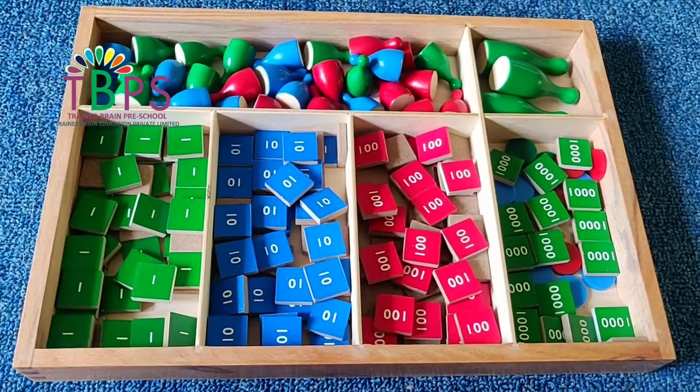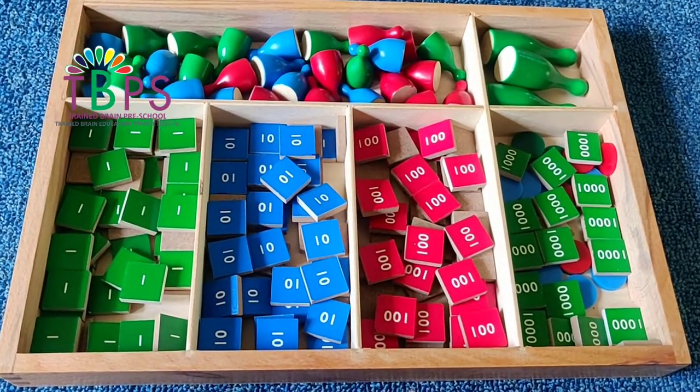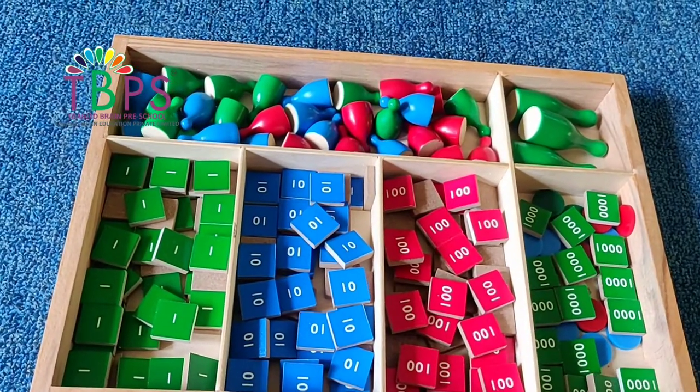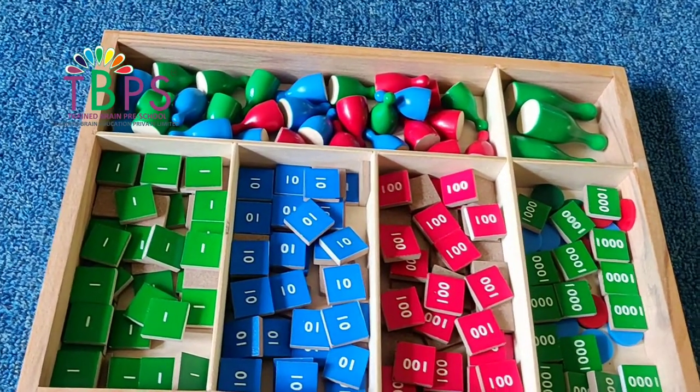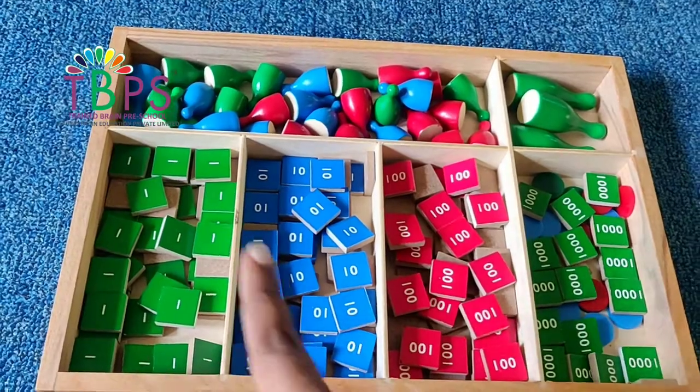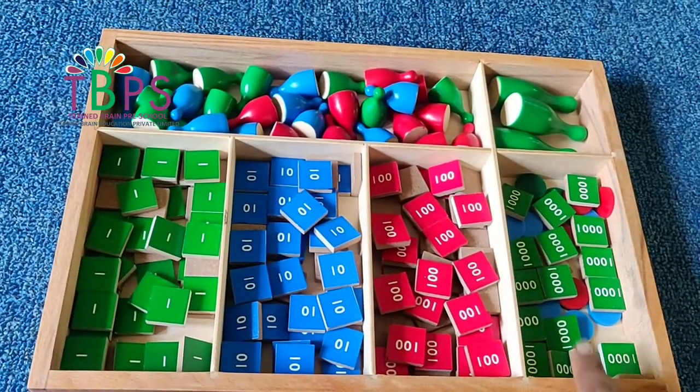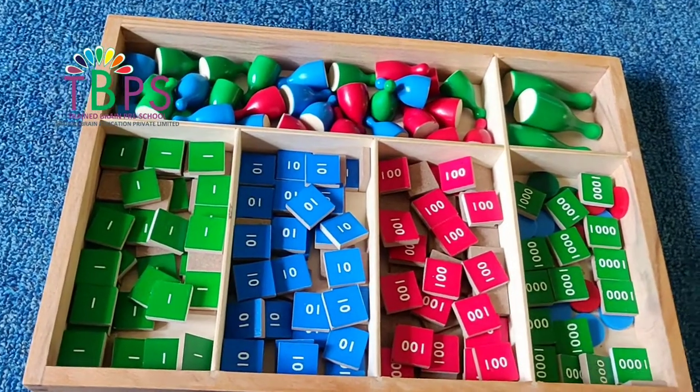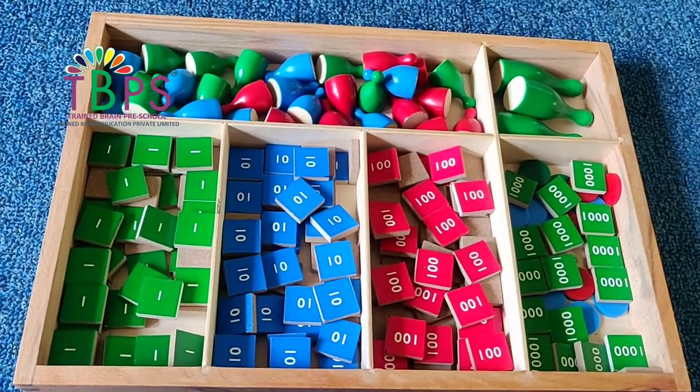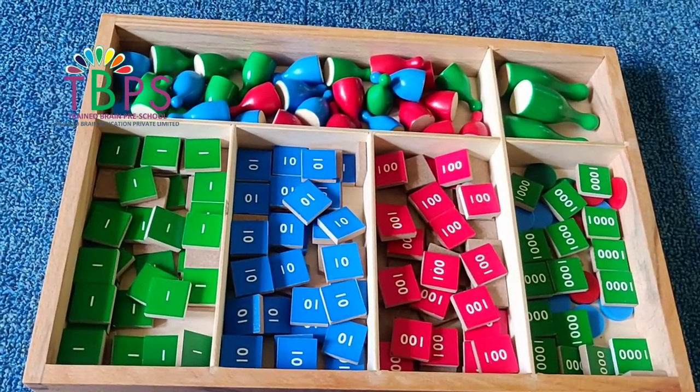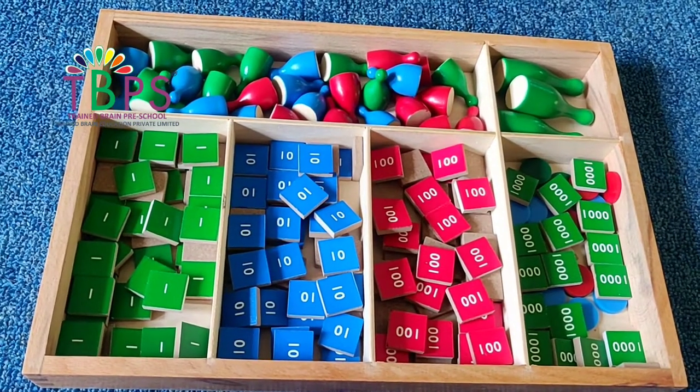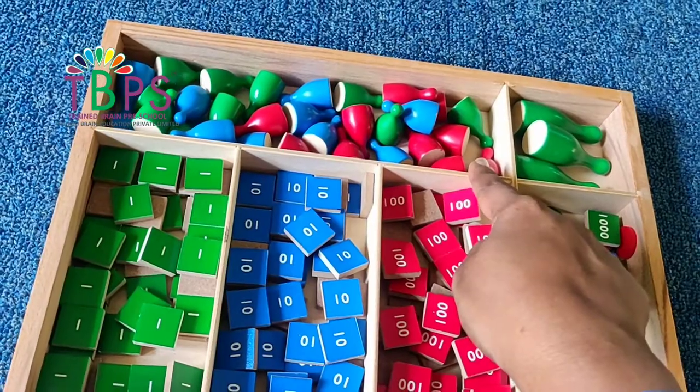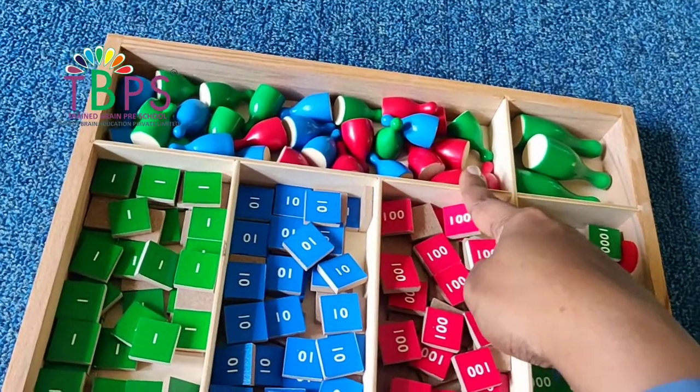By now you would have identified that each of those quantities is the same size of a stamp, and thereby the name. The major difference here is that each number is printed accordingly and it has been color coded—we have ones, tens, hundreds, and thousands. We store this material in different compartments so it becomes easy for the child to pick and solve quantities according to their place value. We would also have some skittles to represent our units, tens, hundreds, and thousands.